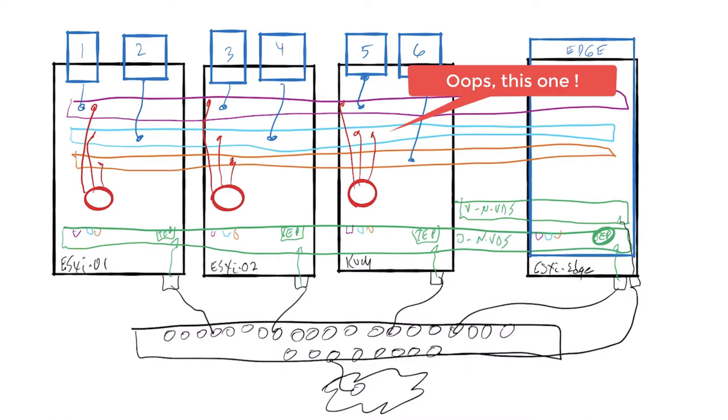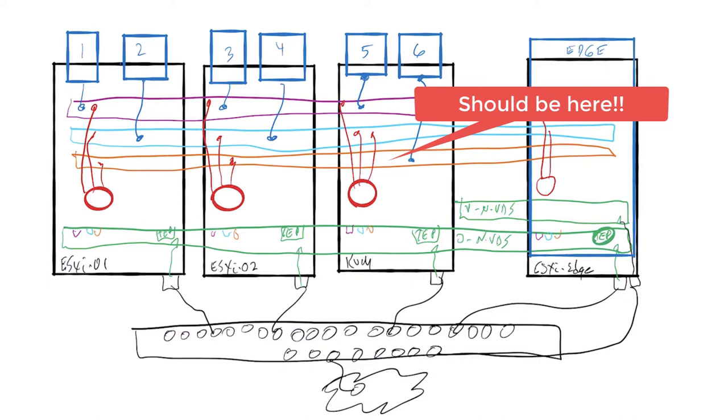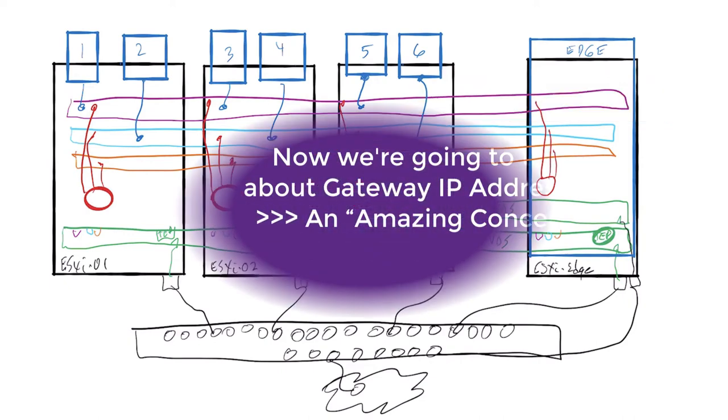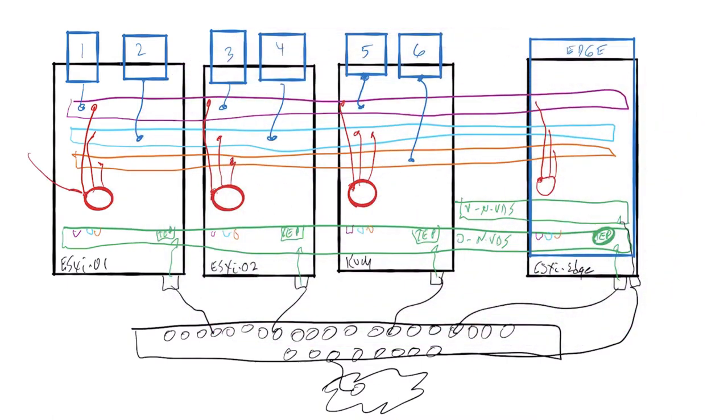Now, the one thing I neglected to draw was the fact that the gateway exists over here, also on the edge, and has those interfaces here. That's interesting. What's this IP? Well, that IP is the same as this IP, and the same as this IP, and the same as this IP.